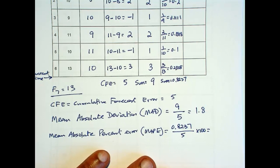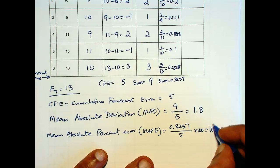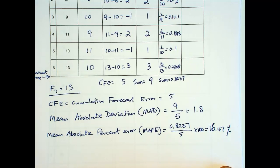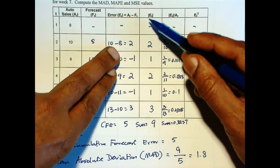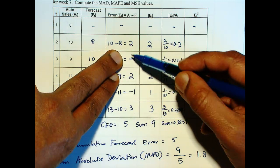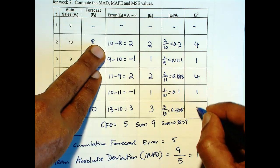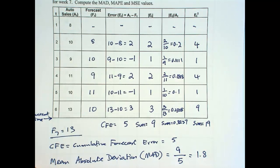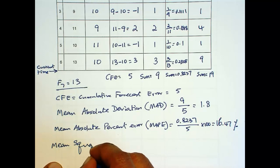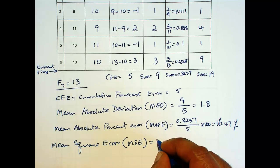There is one more error measure that we can compute. And that is to square the error. Instead of taking the absolute value, a second way of not having the positives cancel out the negatives is to square it. So you get 4, 1, 4, 1, and 9. And this sum is 19. So mean square error or MSE is 19 over 5 is 3.8.